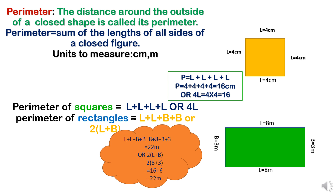Distance or length is a one-dimensional quantity that we can measure with units like meter, centimeter, and inches. The units are really important when you are talking about perimeter.